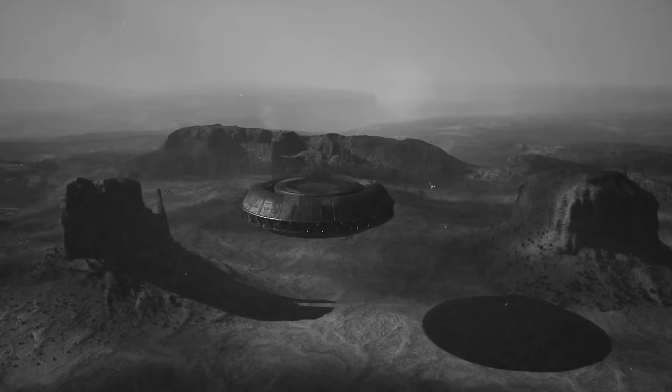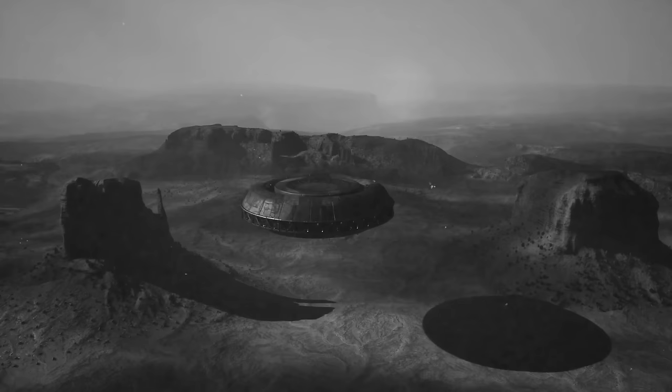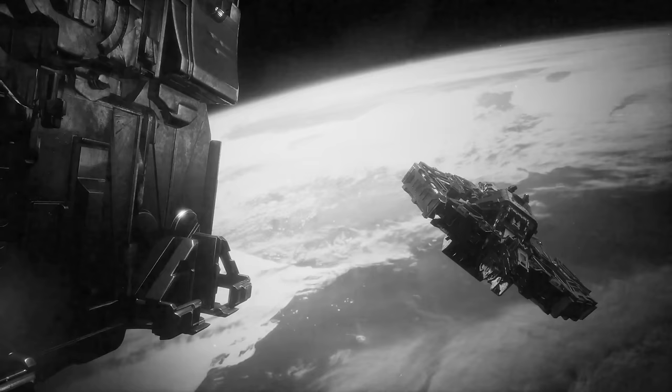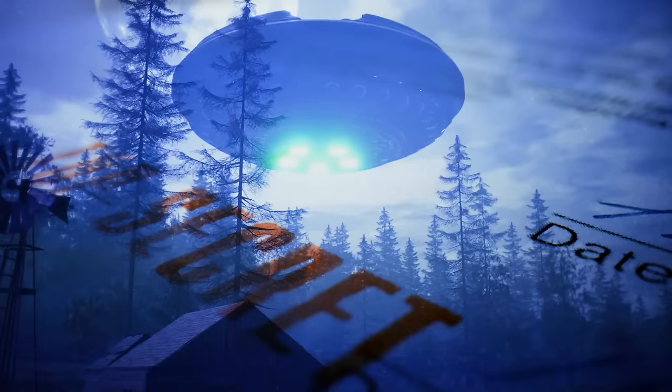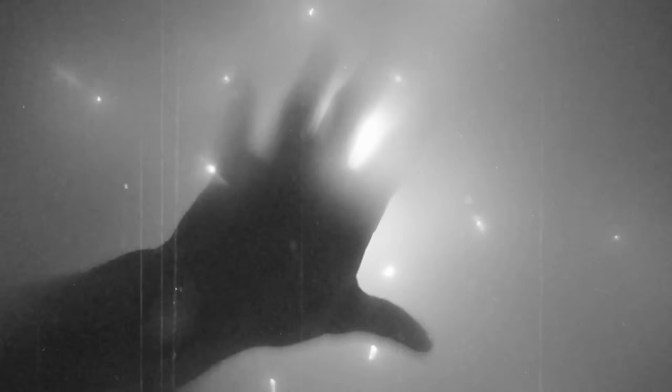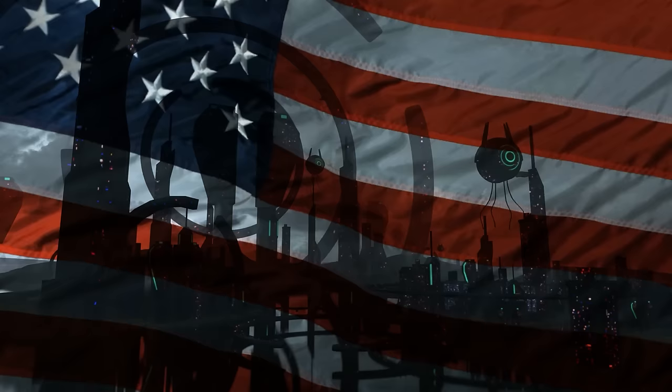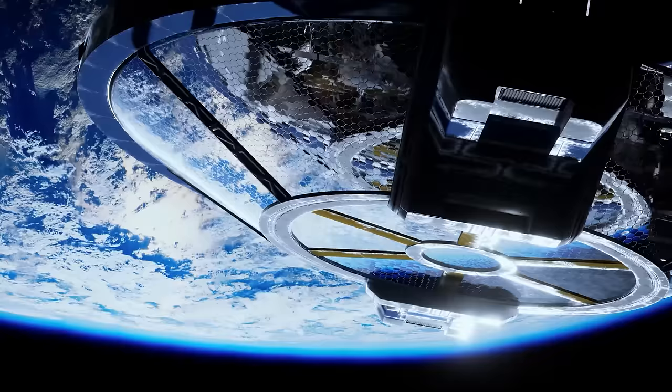Imagine spaceships defying gravity, materials stronger than diamond, and who knows what other scientific breakthroughs waiting to be unlocked. Both Lazar and Grush paint a picture of a government working tirelessly to keep this information under wraps. They describe a web of secrecy, with stringent security measures, compartmentalized information, and alleged attempts to silence anyone who dares to speak up, their reasoning, national security concerns, and the desire to maintain a technological edge over other countries. Now, it's important to acknowledge that these are extraordinary claims, and extraordinary claims require extraordinary evidence.